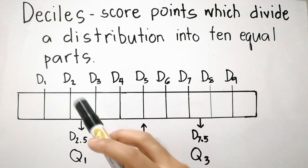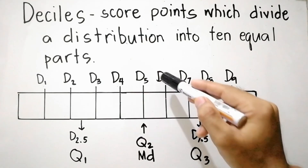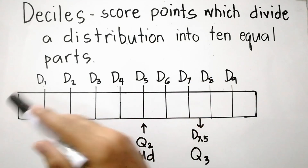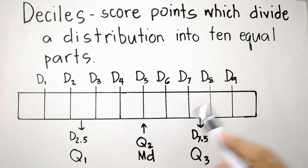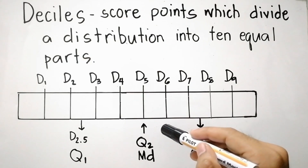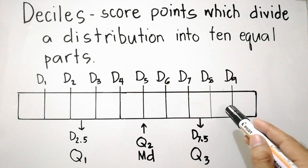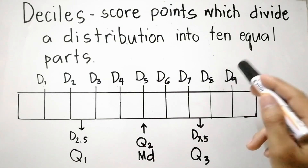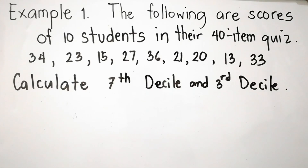Eighty percent is greater than or equal to D sub 2. For D sub 6, sixty percent is less than or equal to D sub 6 and forty percent is greater than or equal to D sub 6. For D sub 9, ninety percent is less than or equal to D sub 9 and ten percent is greater than or equal to D sub 9.